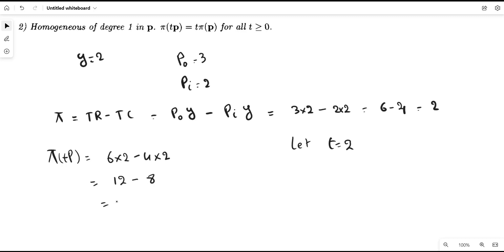This equals 12 minus 8, which equals 4, which can also be written as 2 times 2. This is 2 times the initial profit.